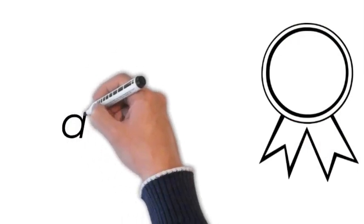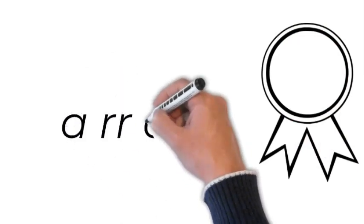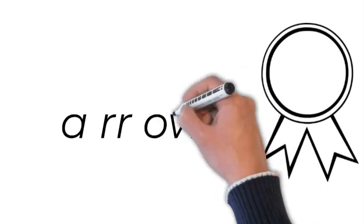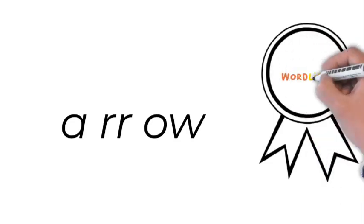How do we spell arrow? A, r, r, o, w. A, r, r, o, w.